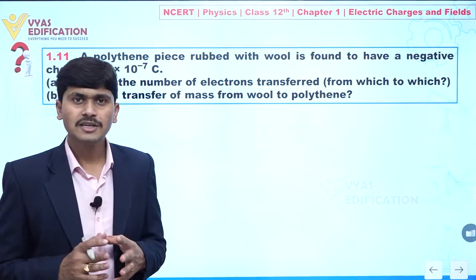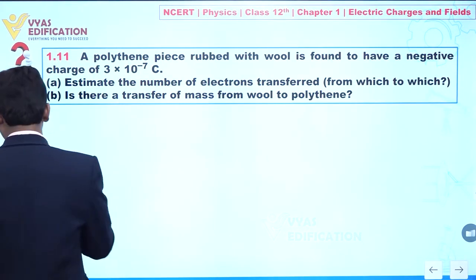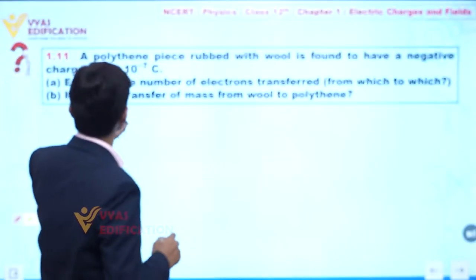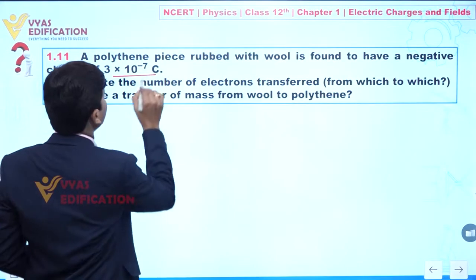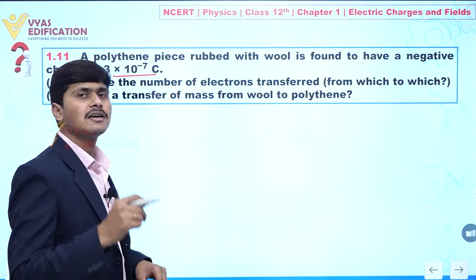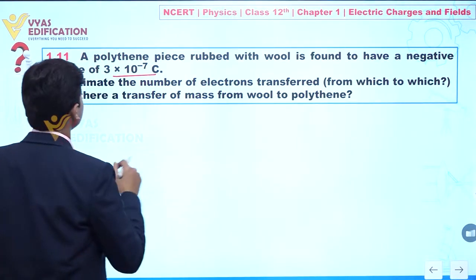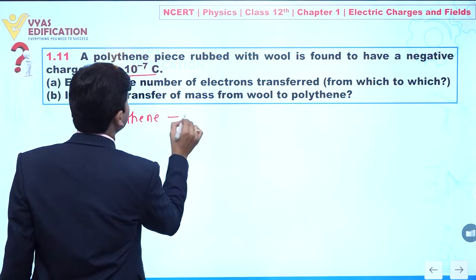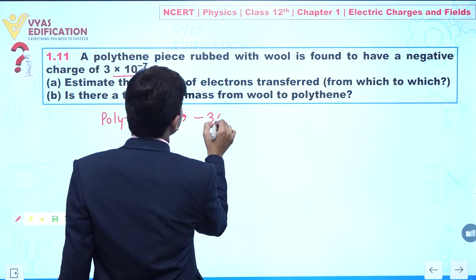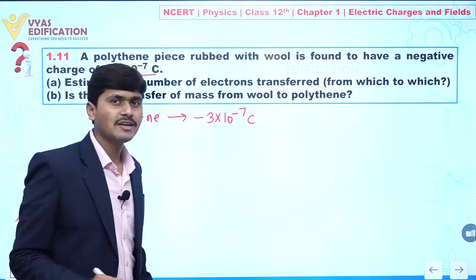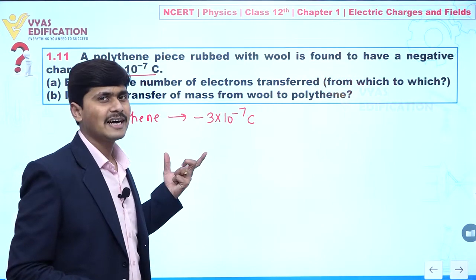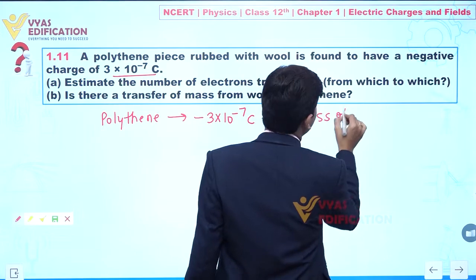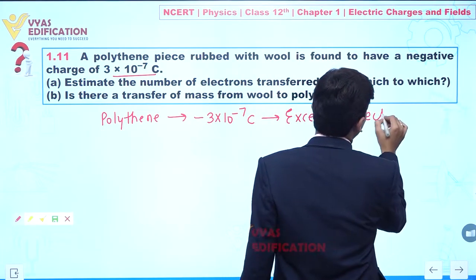We have here a polythene and we have a wool. It is found to have a negative charge of 3 into 10 to the power minus 7. So we can say we have negative charge on polythene — this is minus 3 into 10 to the power minus 7 coulomb. When polythene has a negative charge, we can say there is an excess of electrons.